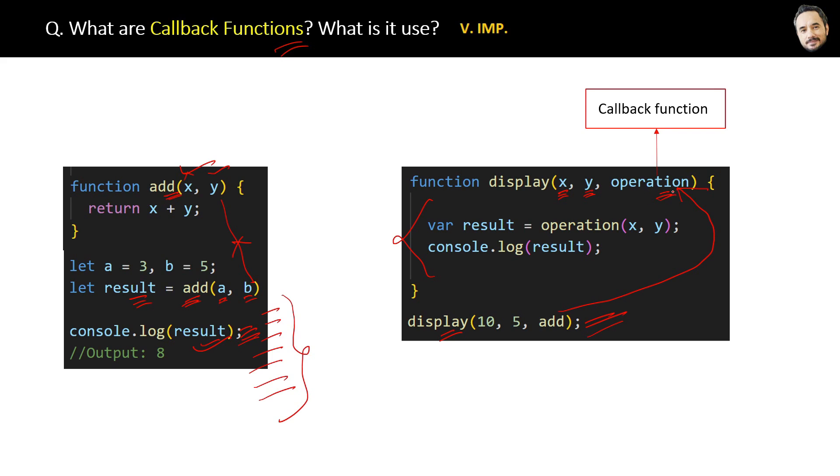So the definition of the callback function is: a callback function is a function that is passed as an argument to another function.